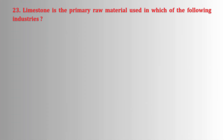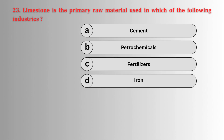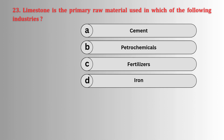Limestone is the primary raw material used in the cement industry.